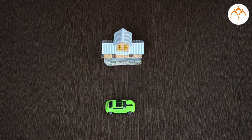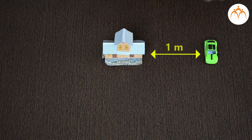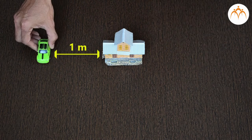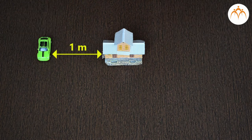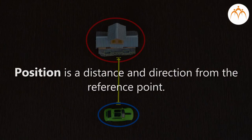How about not specifying direction? The car can be at 1 meter distance to the left side of the house or to the right side of the house. So, in a nutshell, you need all three. Position is a distance and direction from the reference point.